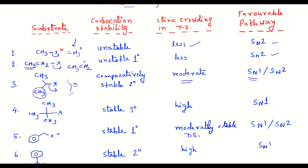Tertiary butyl halide gives rise to a tertiary carbocation that is highly stable due to the plus-I effect and hyperconjugation of three methyl groups. SN1 reactivity will therefore be very high. However, the transition state will be highly crowded due to the three methyl groups, so SN2 will not occur in this example.